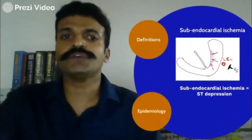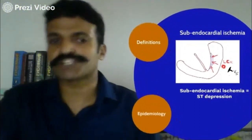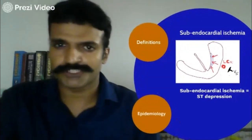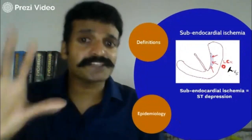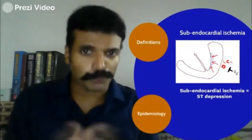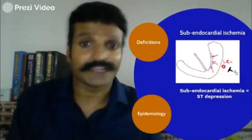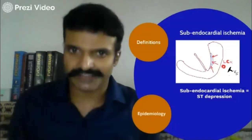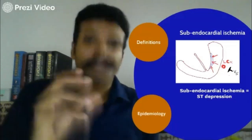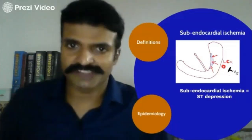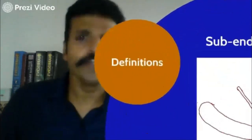So whenever you have ST depression or T inversion, in the presence of the appropriate clinical setting — that is anginal chest pain — this is what we call unstable angina.